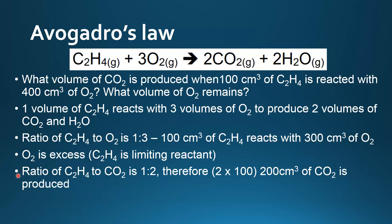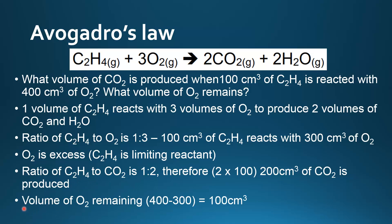To determine the volume of CO₂ that will be produced, we look at the ratio of the limiting reactant — ethene — to carbon dioxide, and it's a one to two ratio. Therefore, two times 100, because we have 100 centimetres cubed of ethene to start with, gives us 200 centimetres cubed of carbon dioxide produced.